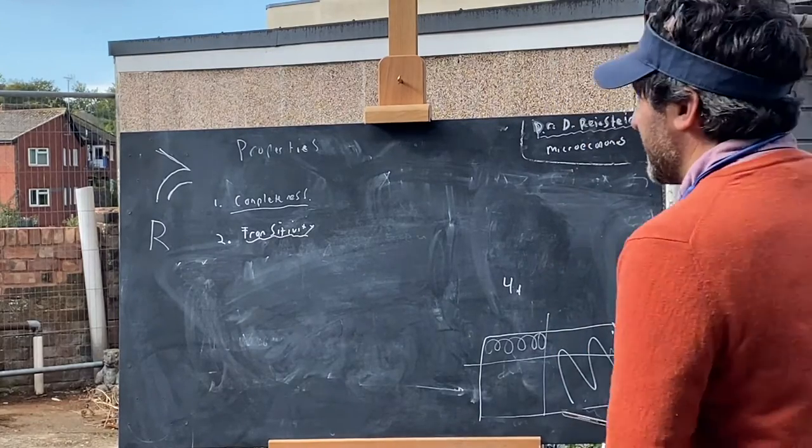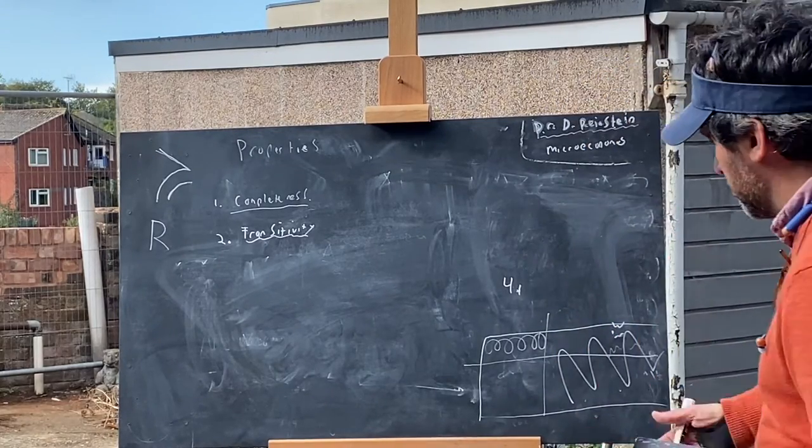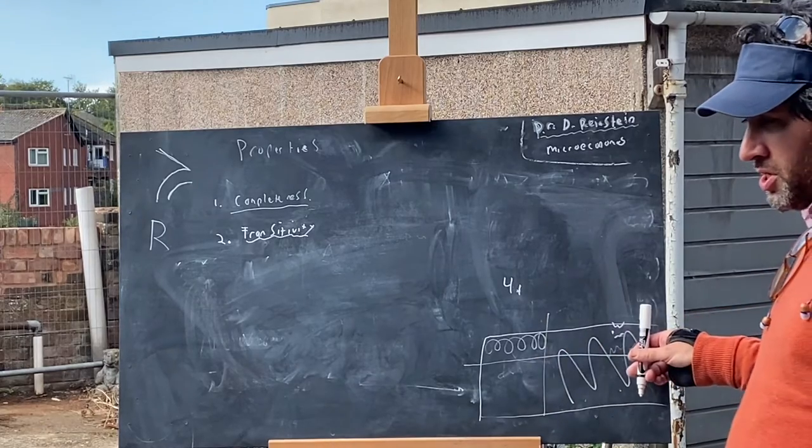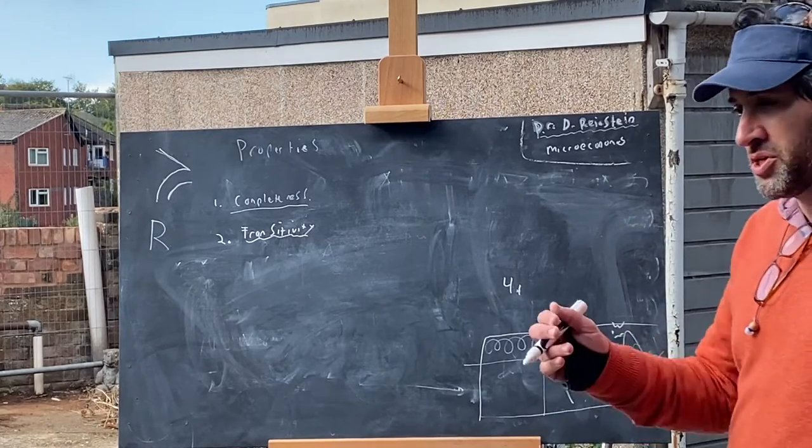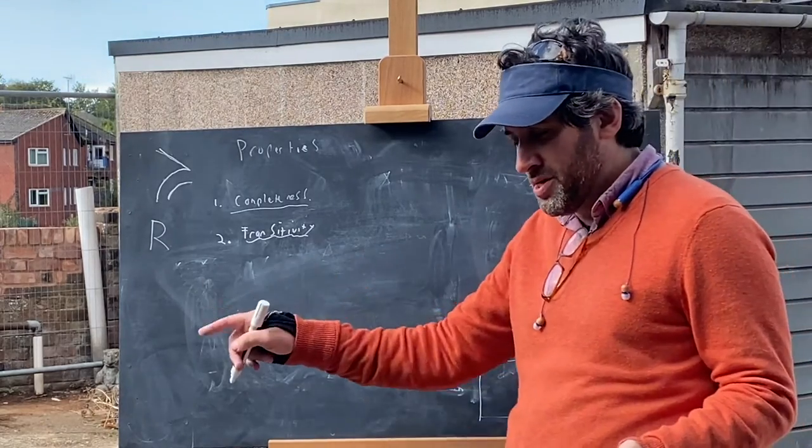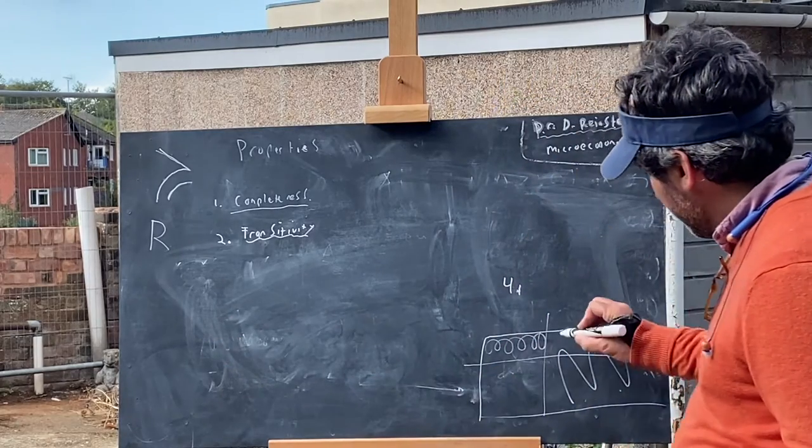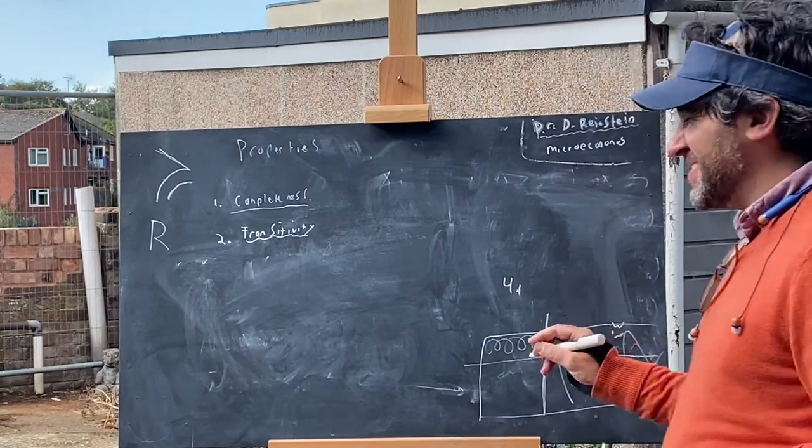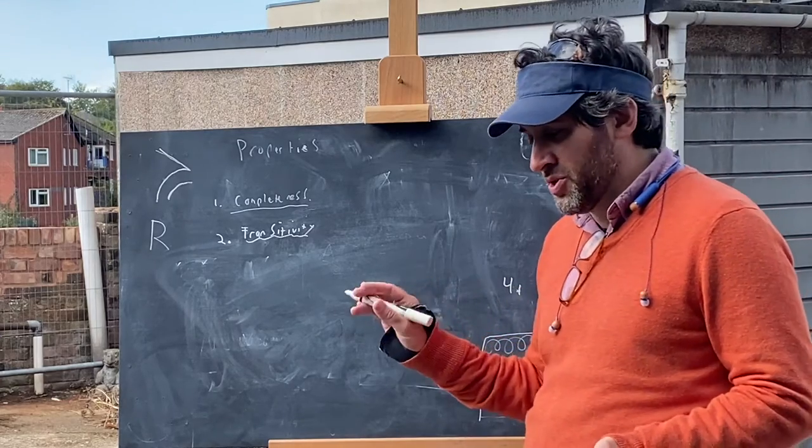We're not quite getting lexicographic, well some of these we are, right? There's discrete choices. Number of bedrooms is basically discrete, it's a countable variable, okay? So maybe this is actually slightly different than lexicographic, but okay.